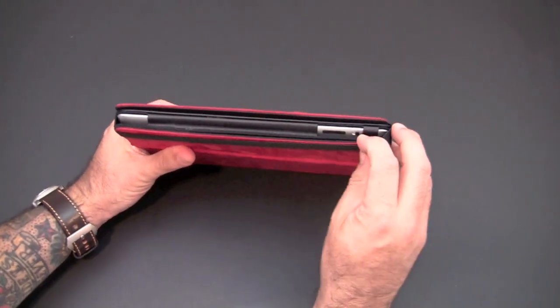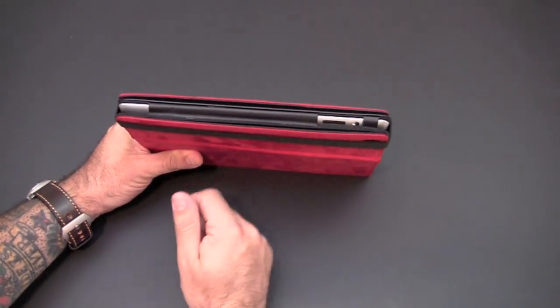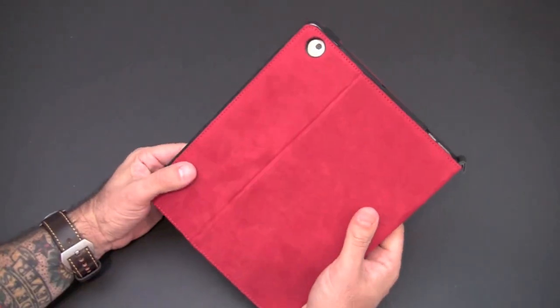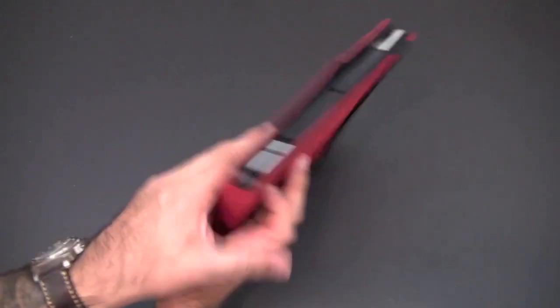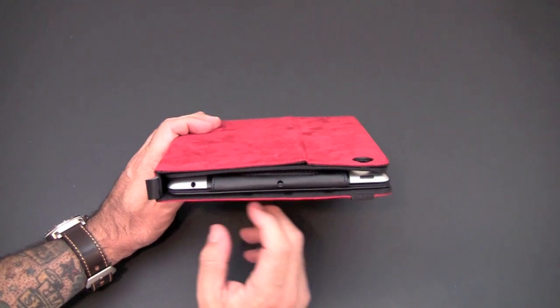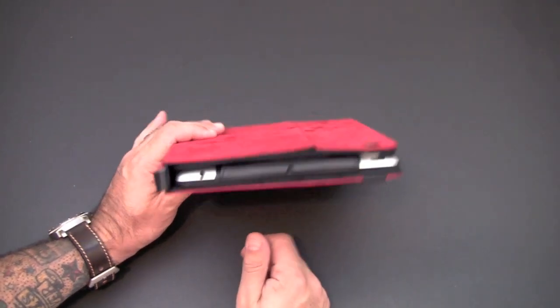On the side there, there's also a nice cutout for your volume rocker and your mute slash orientation switch. If I flip the strap around, you can see the rather large cutout for the rear-facing camera. And then across the top, openings for the headset jack and the sleep-awake as well as a small cutout for the microphone.